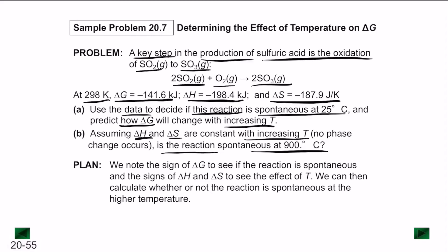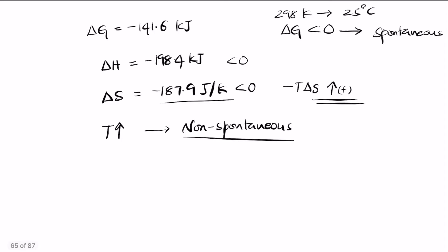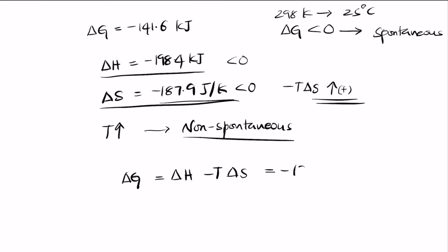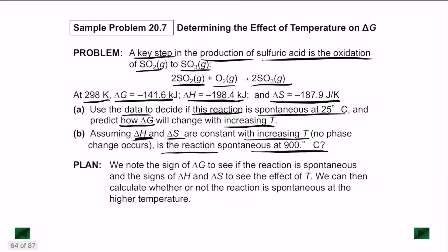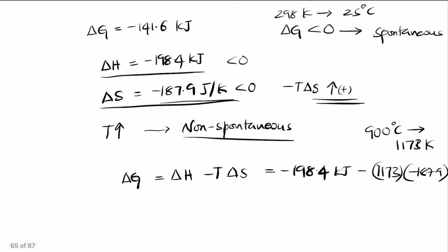Assuming delta H and delta S are constant, is the reaction spontaneous at 900°C? Converting to Kelvin: 900°C is 1173 K. Delta G becomes minus 198.4 kJ minus 1173 K times minus 187.9 J/K, giving a delta G value of 22 kJ. Since delta G is greater than zero, the reaction is non-spontaneous at 900°C.